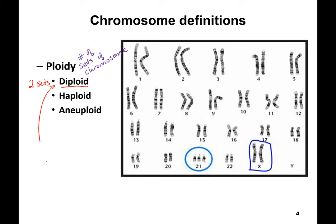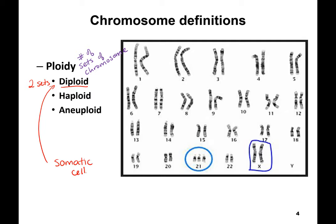In humans, all of what we call your somatic, or body, cells are diploid — your skin, your liver cells, your muscle cells, your brain cells, all of those are diploid. They have two copies of every chromosome.